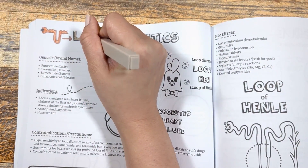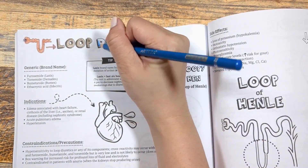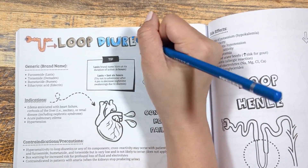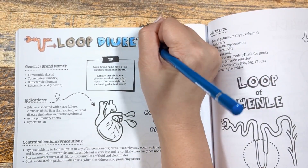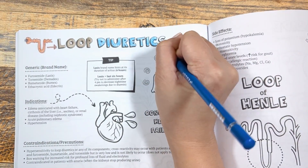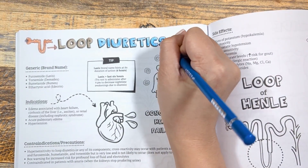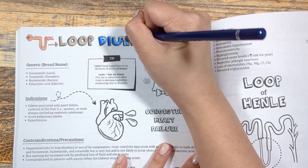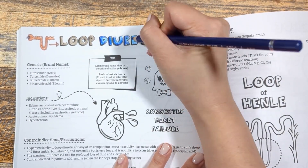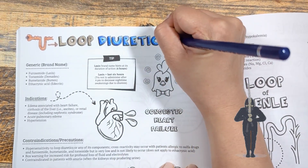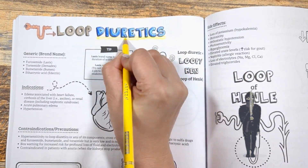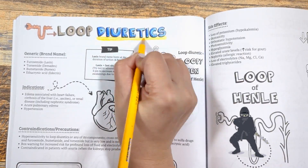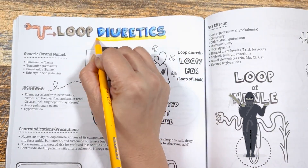Diuretics comes from a Greek word meaning to urinate or diurese. These medications increase the kidney's ability to excrete sodium and water through urine. So if you guessed what these drugs are used for already, you're well on your way. Yep, it is used for fluid overload, or in patients who have retained too much water.